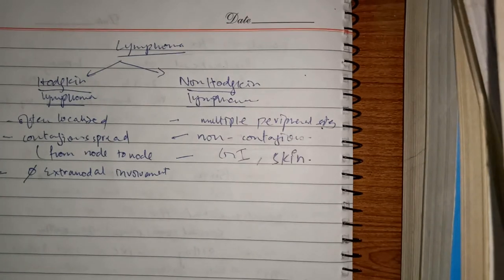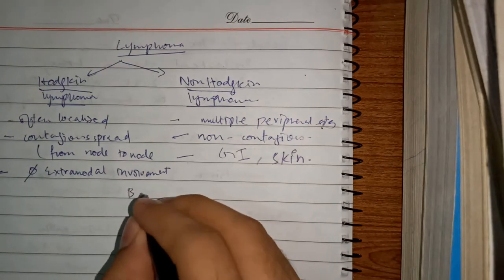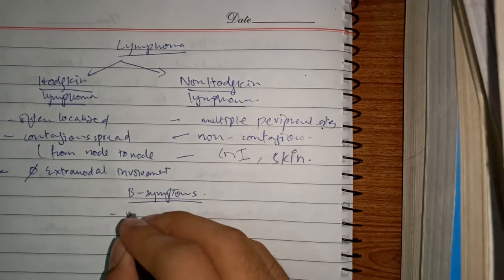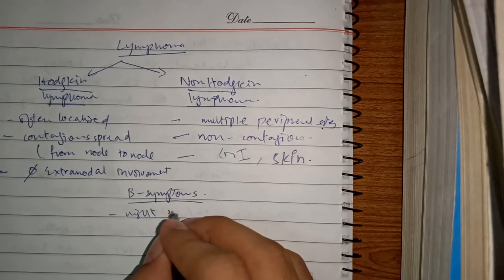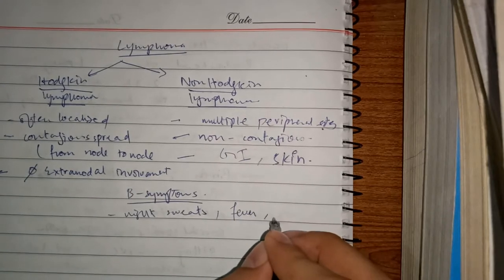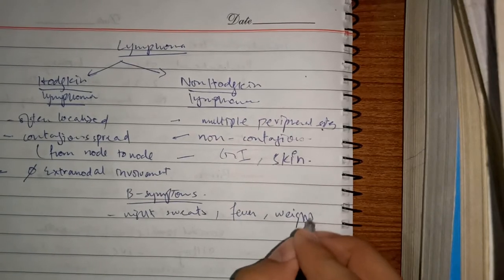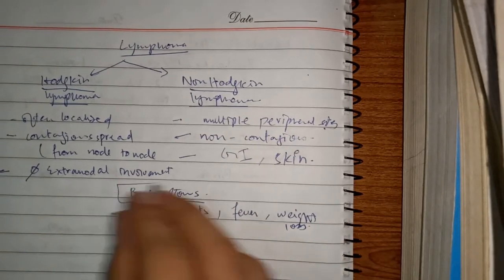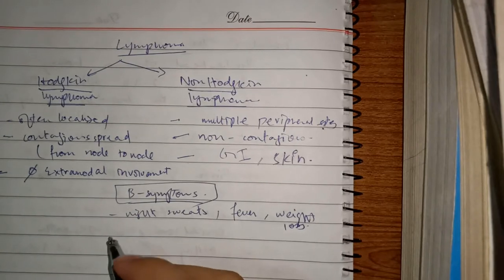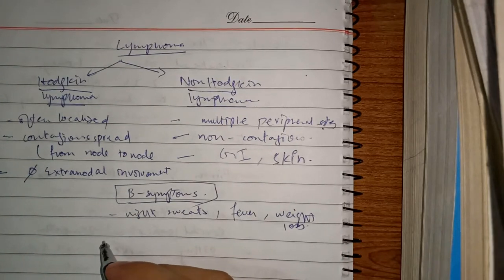Clinically, the patient will have painless rubbery lymphadenopathy. Most commonly they will also present with B symptoms, which include night sweats, fever, and weight loss.